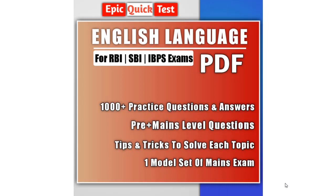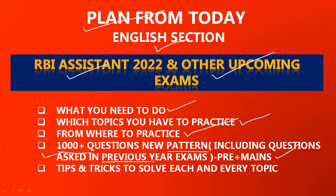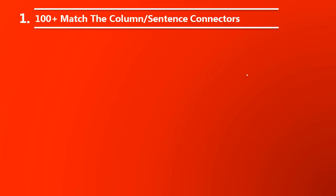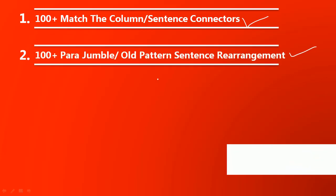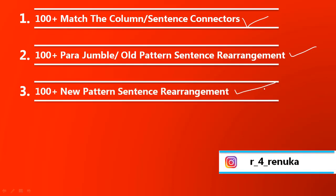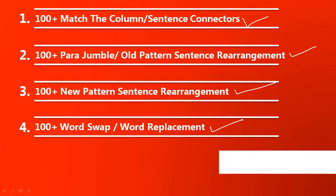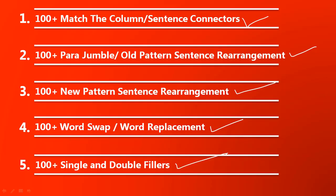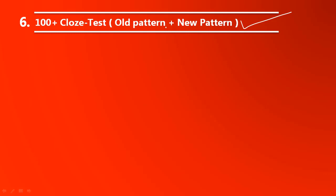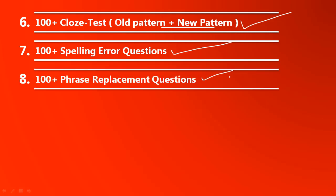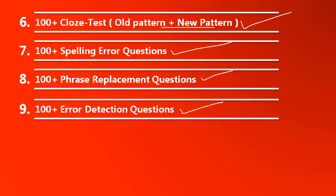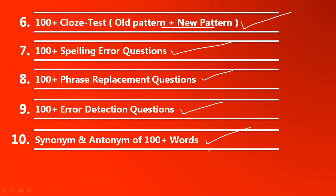In this PDF you will get more than 1000 questions of new pattern as well as questions asked in previous year exams for prelims and mains both, and tips and tricks to solve each and every topic of the English section. The list includes: 100+ practice questions on match the column or sentence connectors, 100+ on parajumble or old pattern sentence rearrangement, 100+ on new pattern sentence rearrangement, 100+ on word swap or word replacement, 100+ on fillers (single and double), 100+ on cloze test (old and new pattern), 100+ on spelling mistakes, 100+ on phrase replacement including phrasal verbs, 100+ on error detection, synonym and antonym of more than 100 words, along with one model set of mains exam.